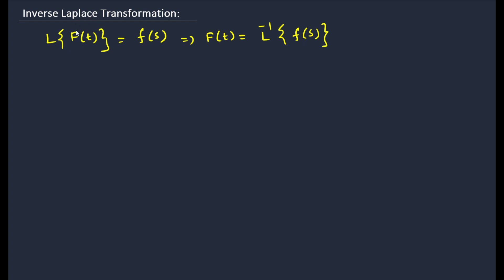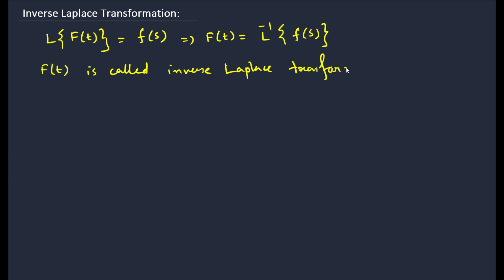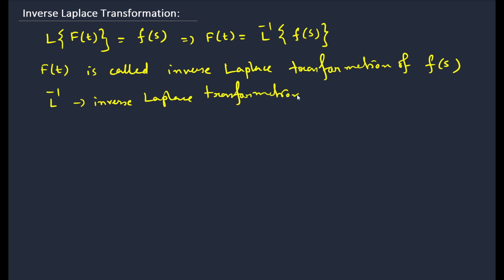You all know that the Laplace transformation of a function is denoted as F(s). If you want to find f(t), then we write L inverse of F(s). So the inverse of F(s) is called the inverse Laplace transformation, and f(t) is the inverse Laplace transform of F(s). Here L is the Laplace transformation operator and L inverse is the inverse Laplace transformation operator.